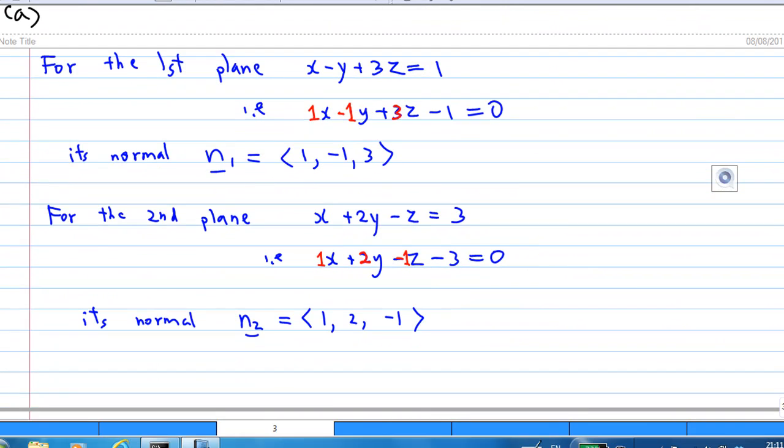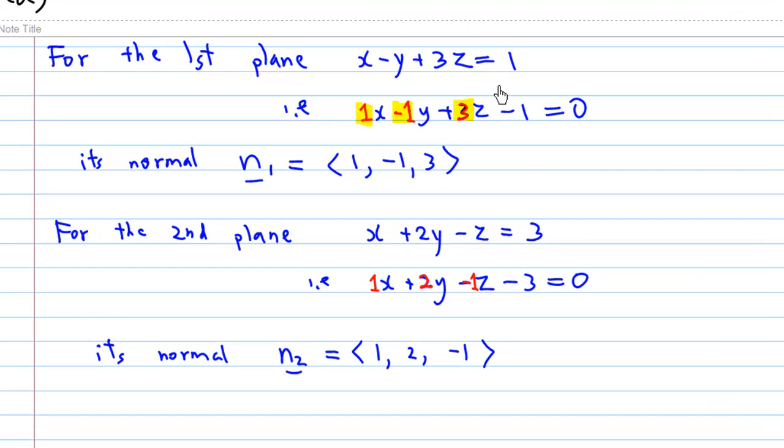Now, from the first plane, the equation is x minus y plus 3z equals 1, so we can rewrite it as 1x minus 1y plus 3z minus 1 equals 0. Therefore, the normal n1 to the first plane is 1, minus 1, 3.